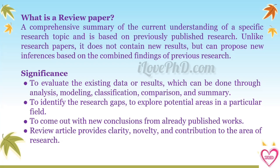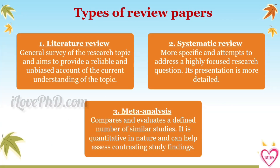It is important to check the journal submission guidelines. Review articles are typically of three types: literature reviews, systematic reviews, and meta-analysis. A literature review is a general survey of a research topic aiming to provide a reliable and unbiased account of the current understanding. A systematic review is more specific and attempts to address a highly focused research question, with detailed information on the search strategy, eligibility criteria, and methods used. A meta-analysis compares and evaluates a defined number of similar studies; it is quantitative in nature and helps assess contrasting study findings.